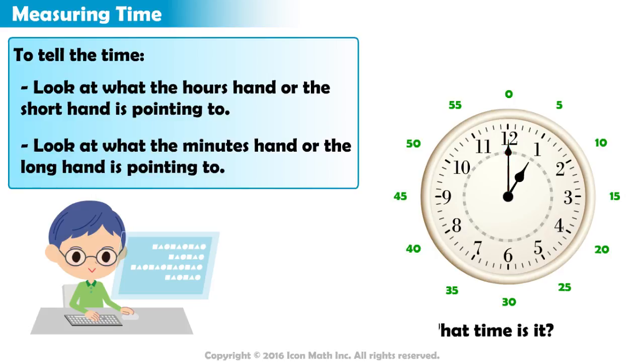OK, can you tell the time here? Well, we say that it is exactly 1, because we can see that the hour hand is pointing at 1, while the minute's hand is at 0.